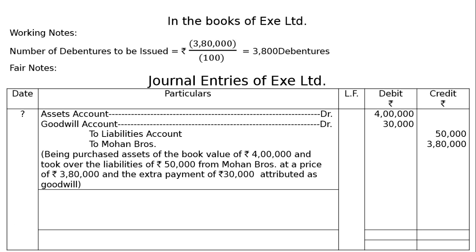To Mohan Brothers, Rs. 3,80,000 is given in the question. We are paying them Rs. 3,80,000 and not Rs. 3,50,000. We are paying Rs. 30,000 extra because there is goodwill — that is goodwill of the business. We are paying extra for goodwill. Hence, goodwill account is debited Rs. 30,000.